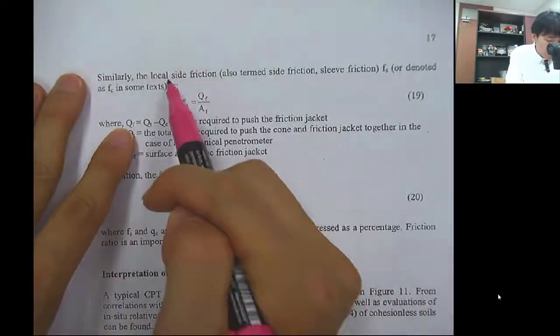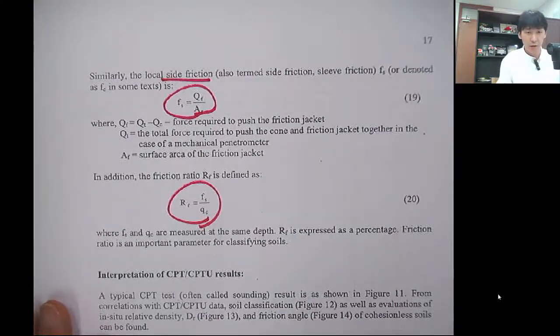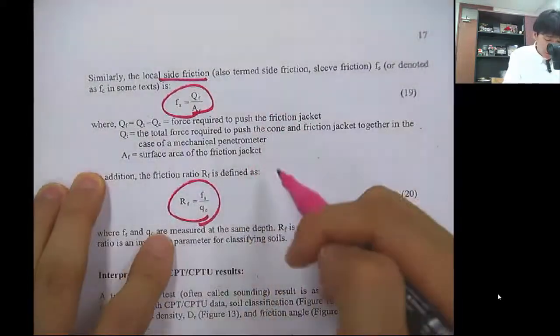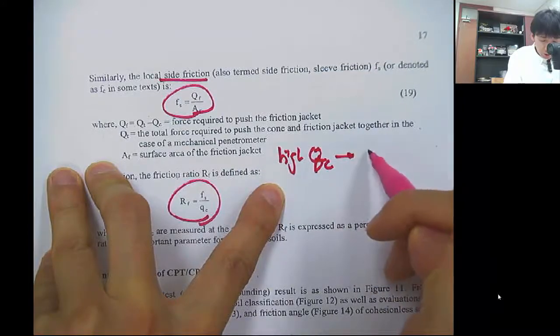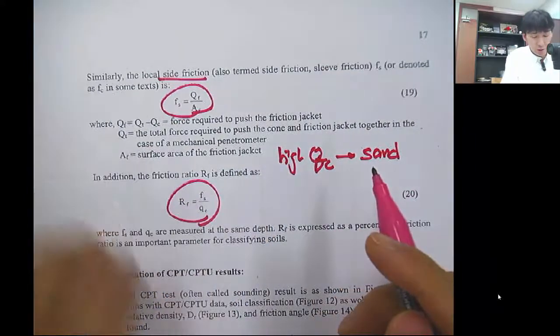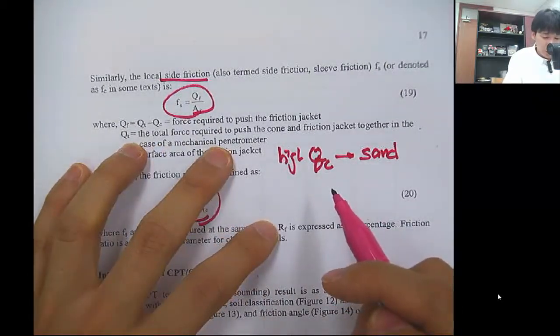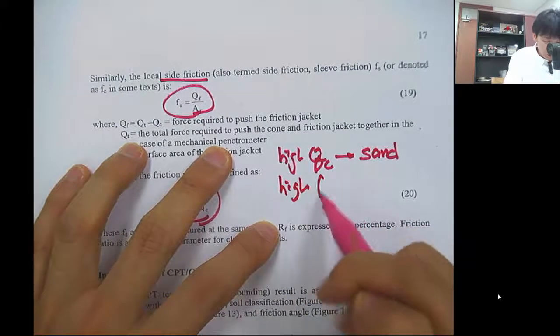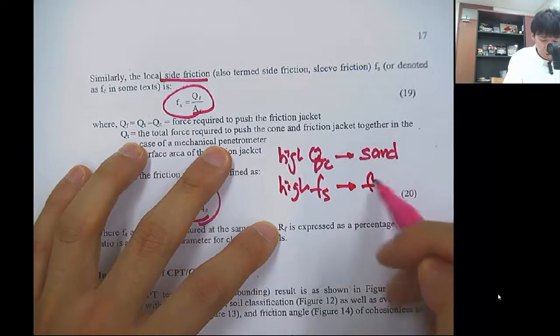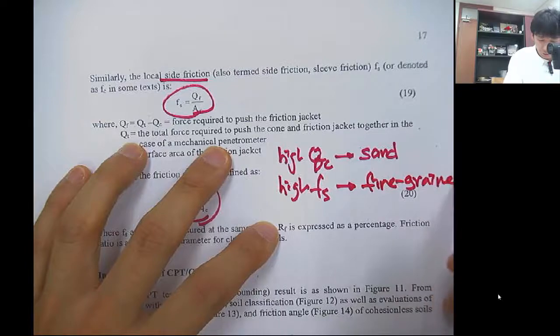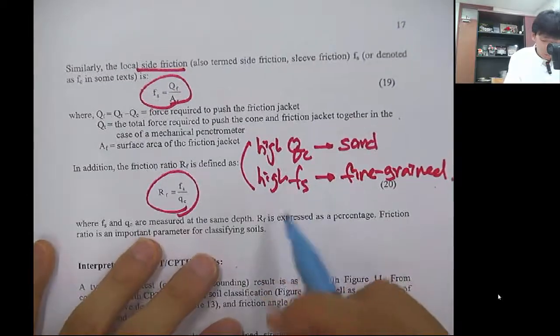Also, the side friction is the same, the force divided by the area, and Rf is the friction ratio. Here, the high QC means that it is sand. As the particle becomes larger, because it is difficult to penetrate, you will have a high cone tip resistance. High side friction can be obtained when you have fine soil.